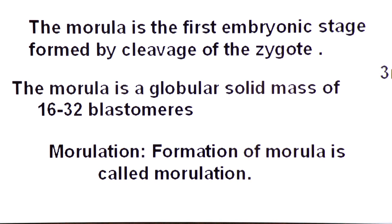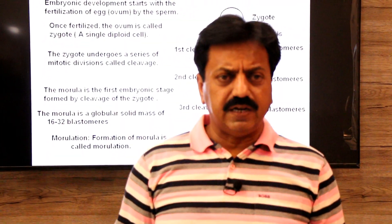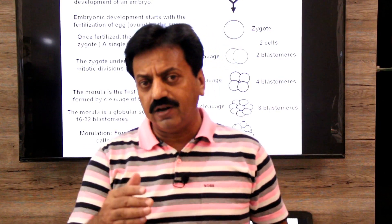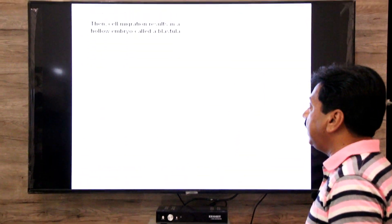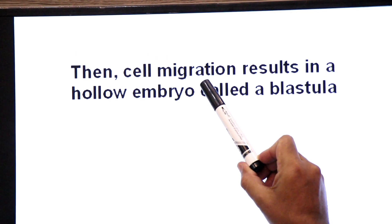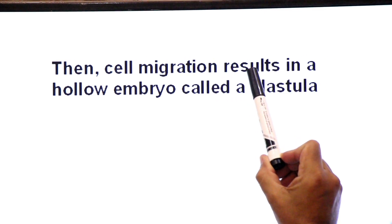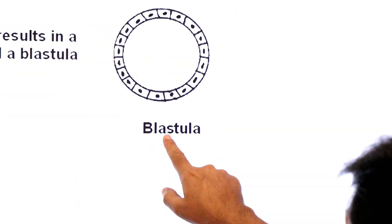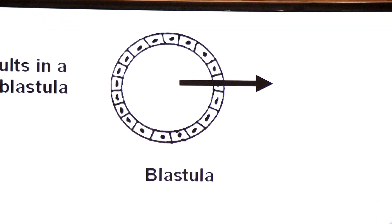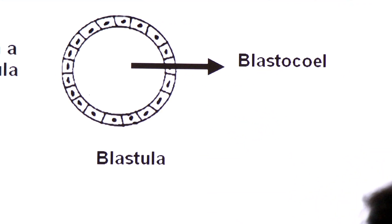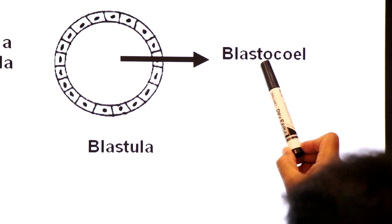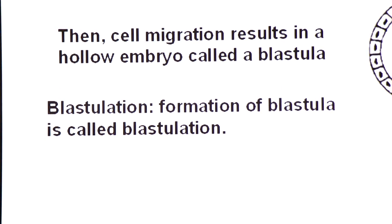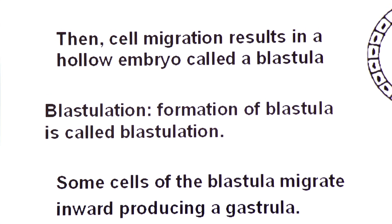The formation of morula is called morulation. So the first embryonic stage is morula. Then comes the blastula stage. Cells migrate and a hollow embryo forms called blastula. The cavity inside the blastula is called blastocoele. An embryo with a blastocoele is called blastula, and the formation of blastula is called blastulation.